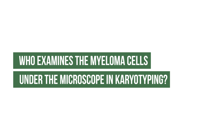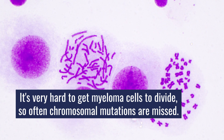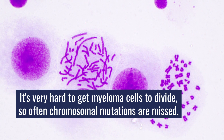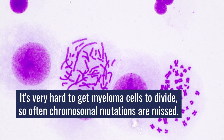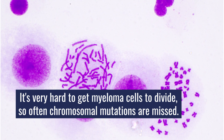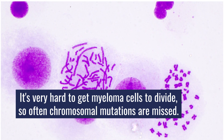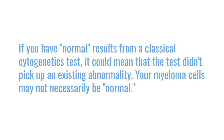It's done by a researcher, hematopathologist, or cytogeneticist in the laboratory. Often what happens is it's very hard to get the myeloma cell to actually divide in the dish, so it looks like the conventional cytogenetics is normal — but that really just means we couldn't get the myeloma cell to divide and couldn't analyze it properly. So most of the time when we do this test in myeloma patients it's normal, but that doesn't mean the myeloma cell is normal; it just means the test failed.